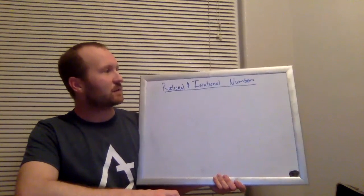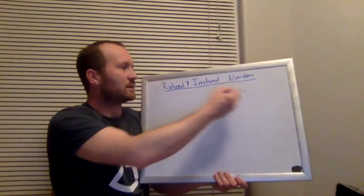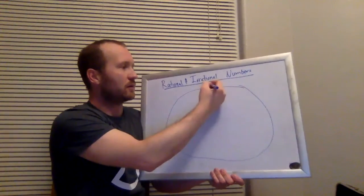So what are rational and irrational numbers? To really understand this, we have to look at the number system as a whole. And so far, the number system that we've looked at is called the real numbers.